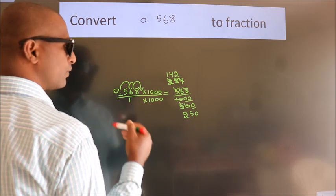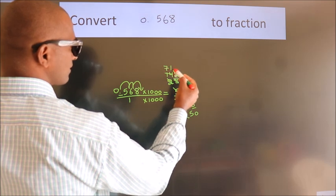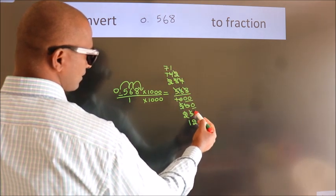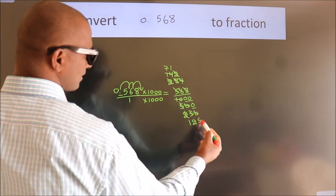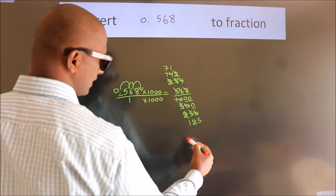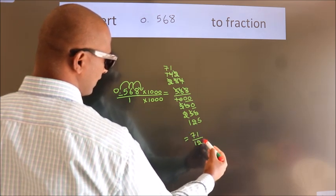Now I cancel with 2 again: 2 7s, 2 1s, 2 1s, 2 2s, 2 5s. This cannot be simplified further. So our fraction is 71 by 125.